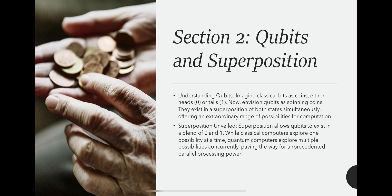Section 2: Qubits and Superposition. Understanding qubits - imagine classical bits as coins, either heads 0 or tails 1. Now envision qubits as spinning coins. They exist in a superposition of both states simultaneously, offering an extraordinary range of possibilities for computation. Superposition unveiled - superposition allows qubits to exist in a blend of 0 and 1.